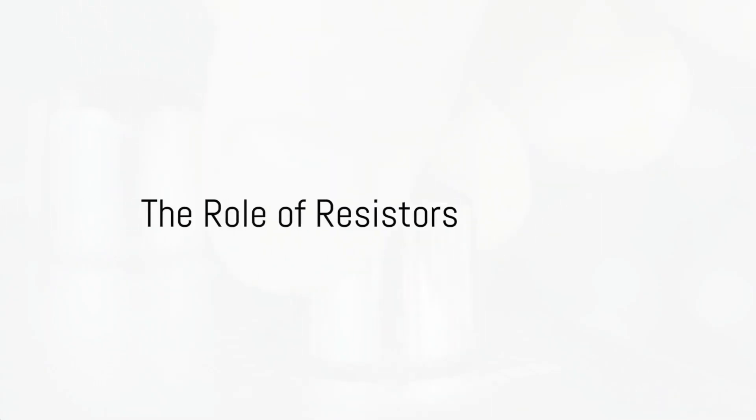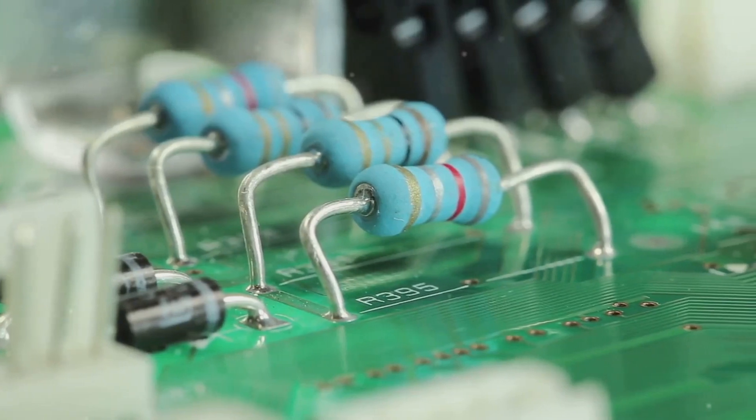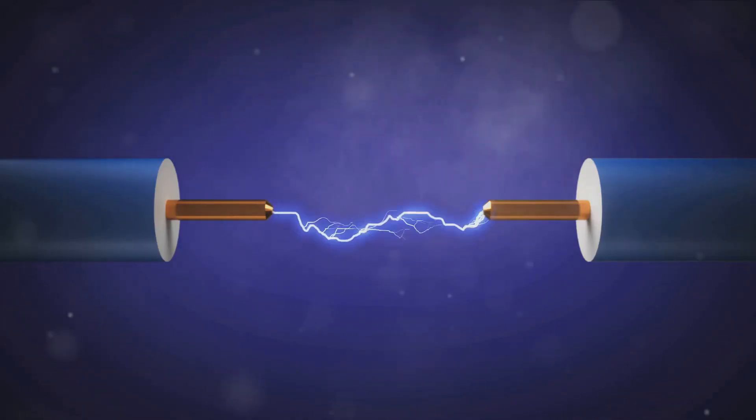A potentiometer, affectionately known as a pot, is a type of resistor. Now resistors, as the name suggests, resist the flow of electric current. They're like the traffic cops of the electrical world, slowing down the charge so it doesn't rush in all at once and cause a short circuit.